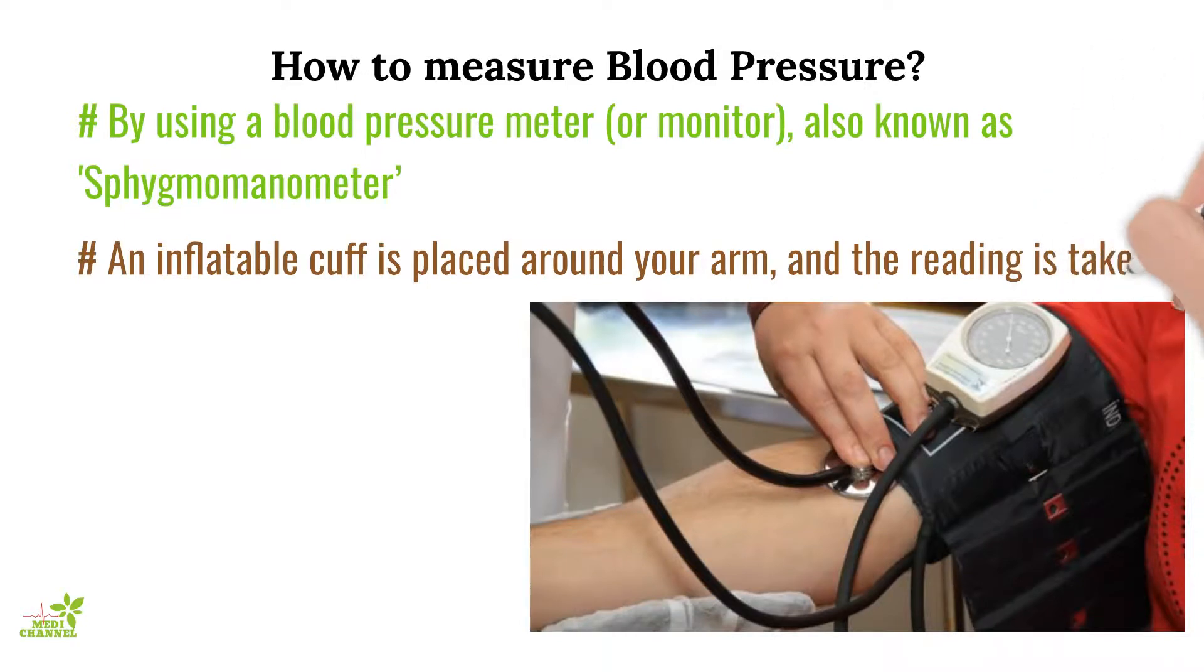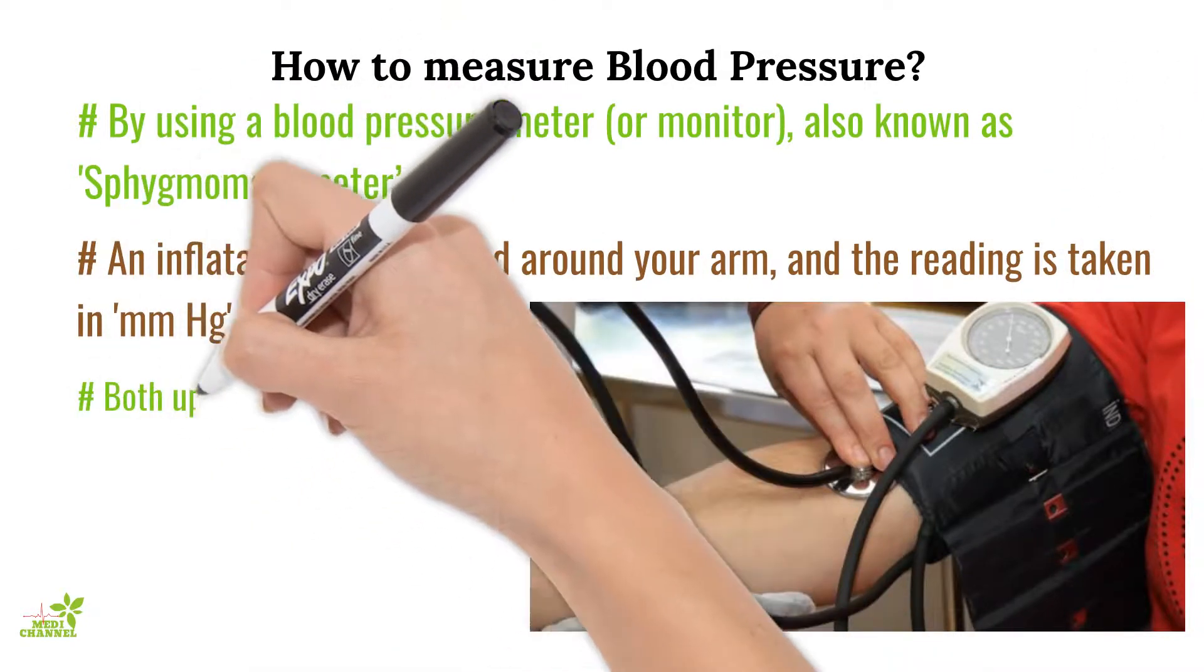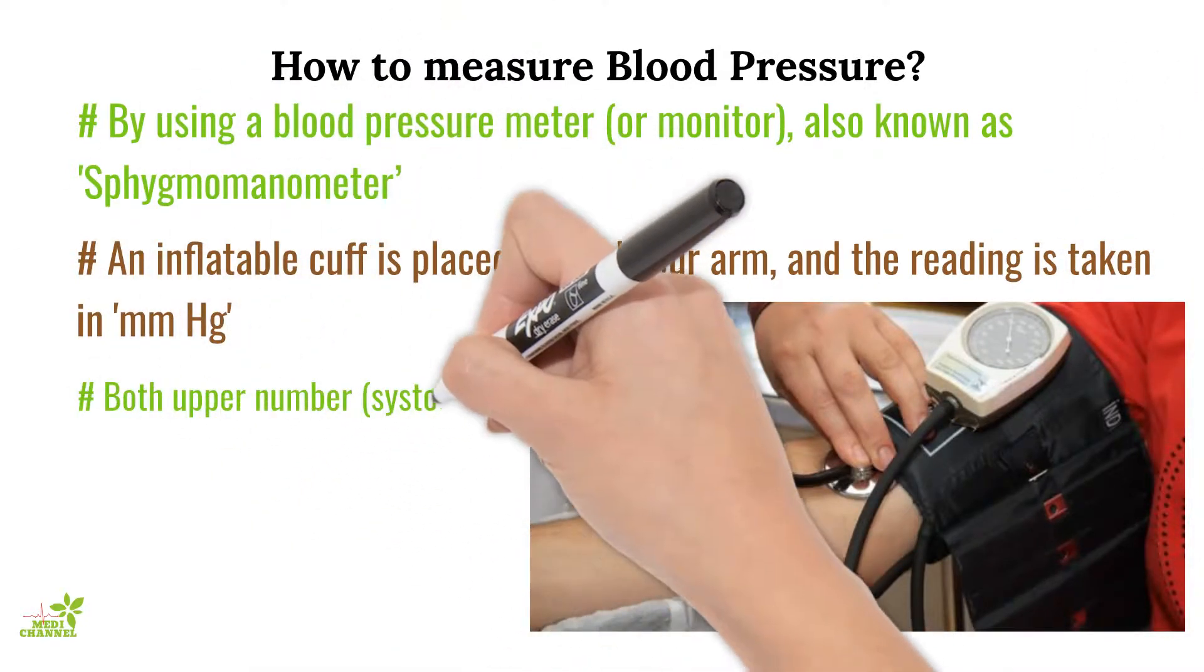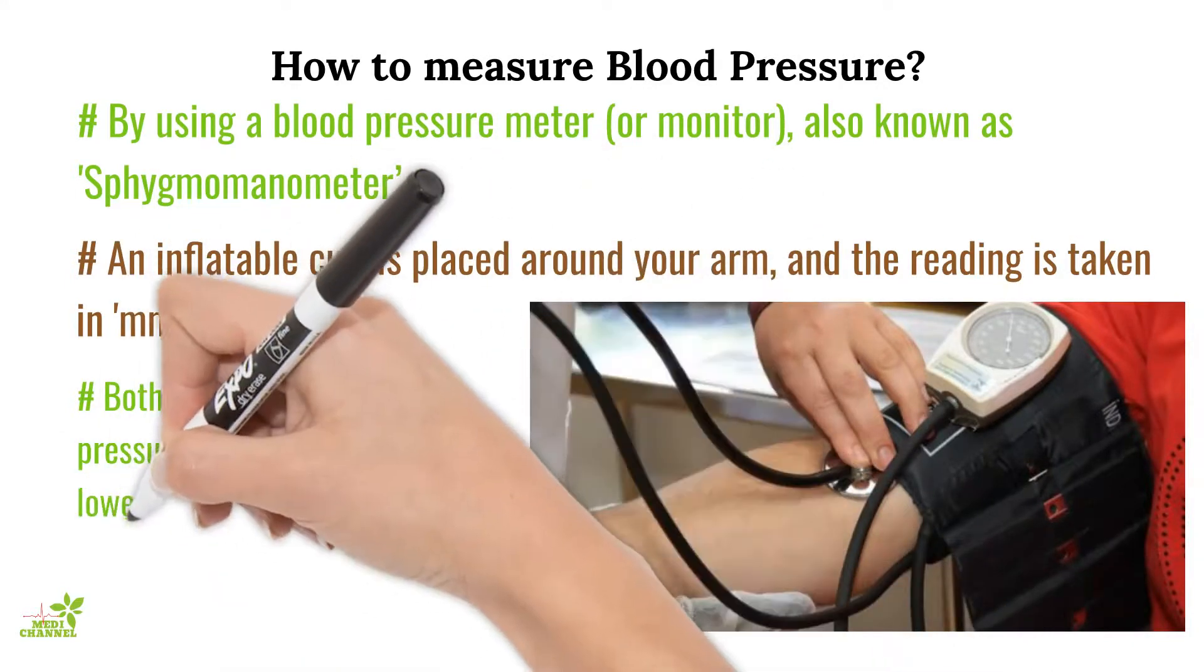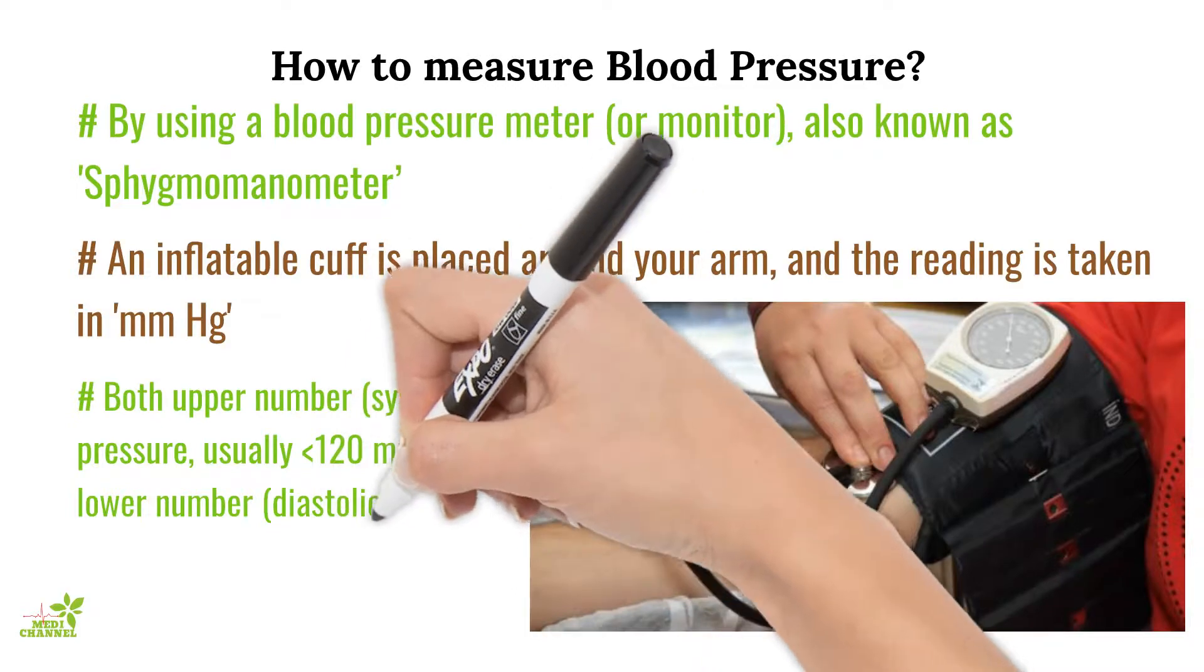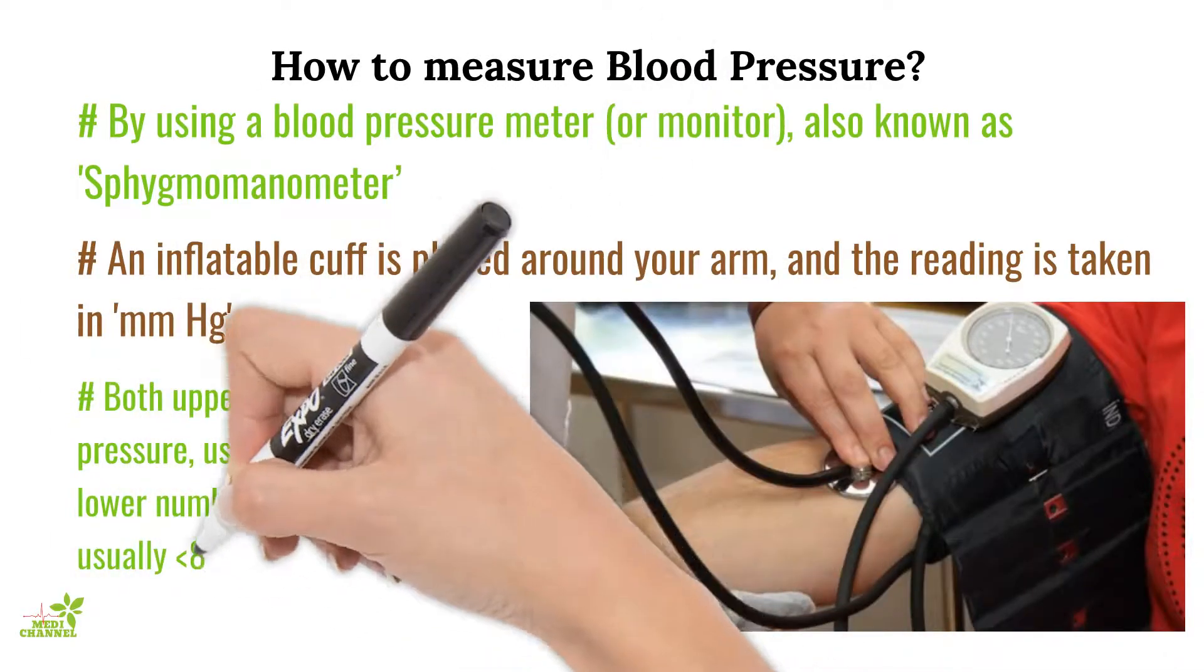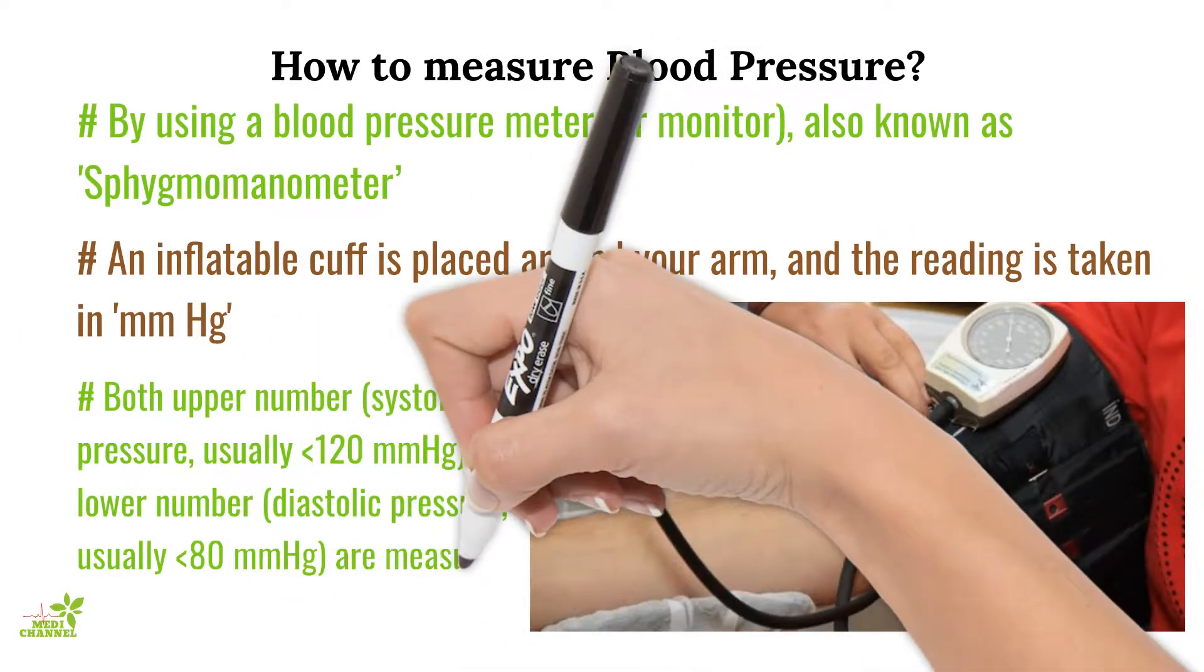The former is the pressure in your blood vessels when the heart beats and the latter is when the heart rests between beats. So, when doctors say 120 over 80, it means your systolic pressure is 120 mmHg and diastolic is 80 mmHg.